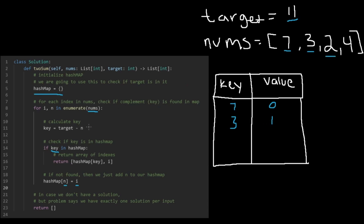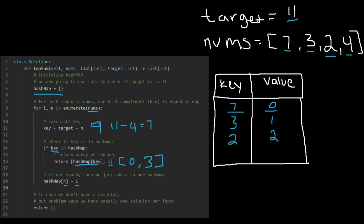Then we check two: 11 minus two equals nine, not in the hash map, so we add key two with value two. Now we get to four: 11 minus four equals seven, and a key of seven does exist in our hash map at index zero. So we return the value at that key and the current index, which gives us zero and three as our answer. That's it — thanks for watching and I'll see you in the next video.